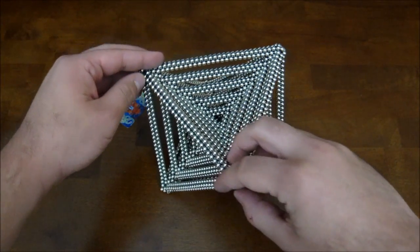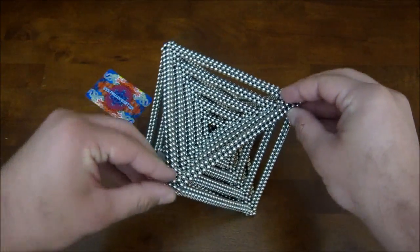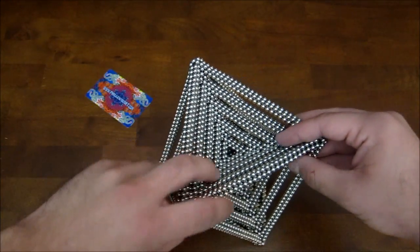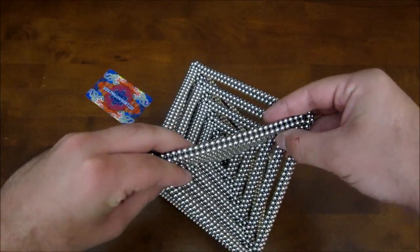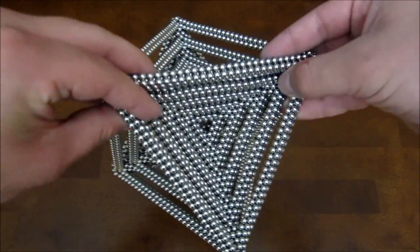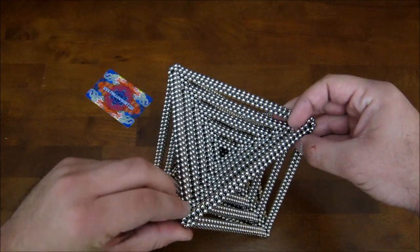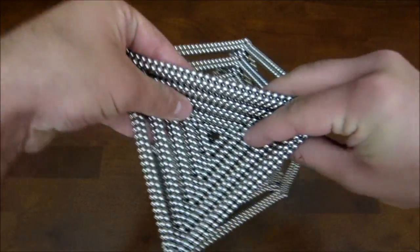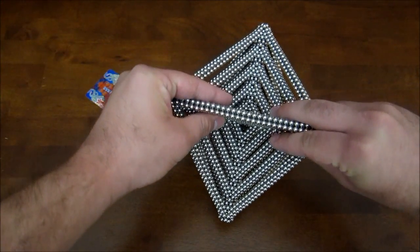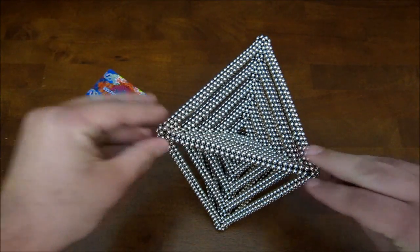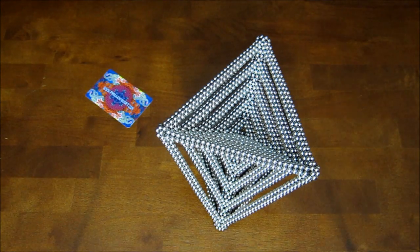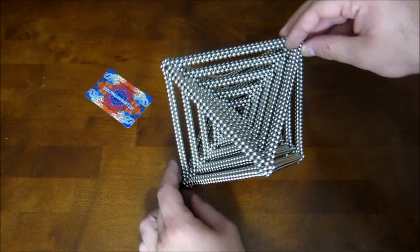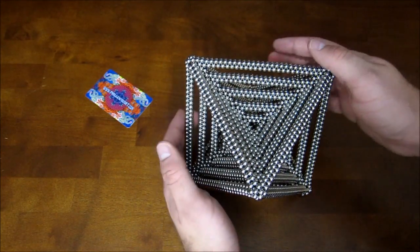And there you go, that is how you build the quintuple octahedron. And as far as these big shapes go, it's pretty durable. You can pick it up, move it around. I mean don't handle it too roughly or it will fall apart, but you can move it around and pick it up and stuff. Six layers just adds too much weight though and it crumbles at six. But there you go, that's how you build it. I guess I'll smash it now.